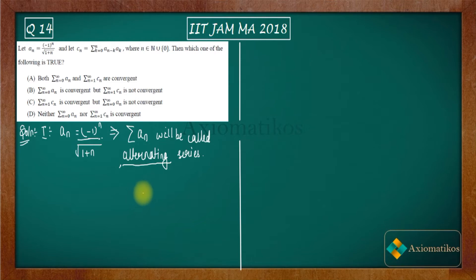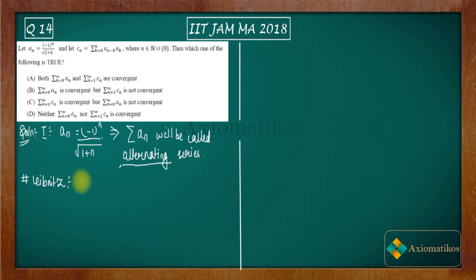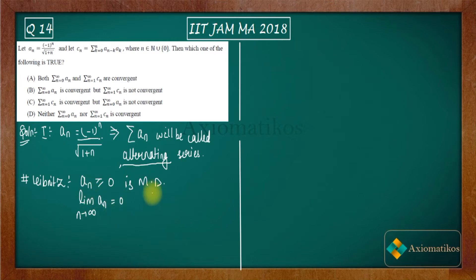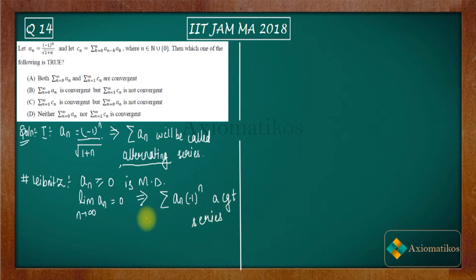We have only one tool to deal with alternating series and that is the Leibniz test. What does Leibniz say? If the sequence aₙ is monotonically decreasing and the limit as n goes to infinity of aₙ is zero, then the series Σ (−1)ⁿ aₙ will be a convergent series.